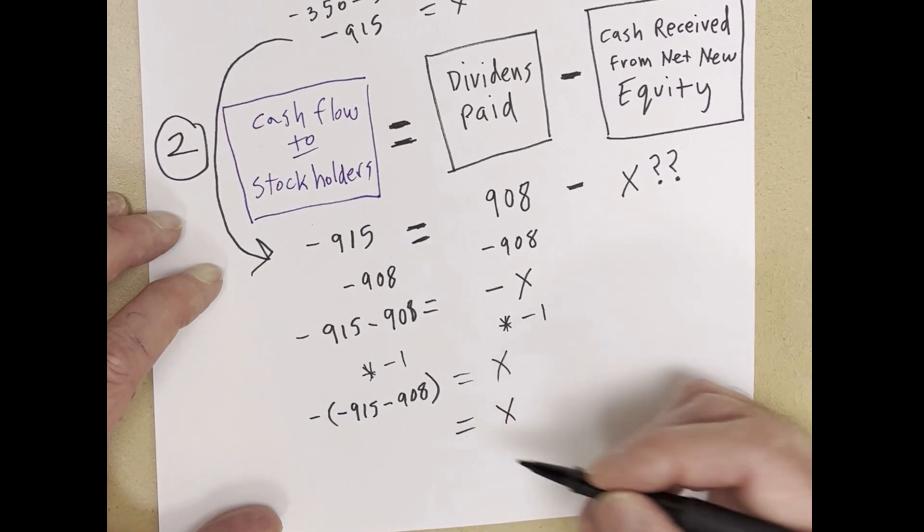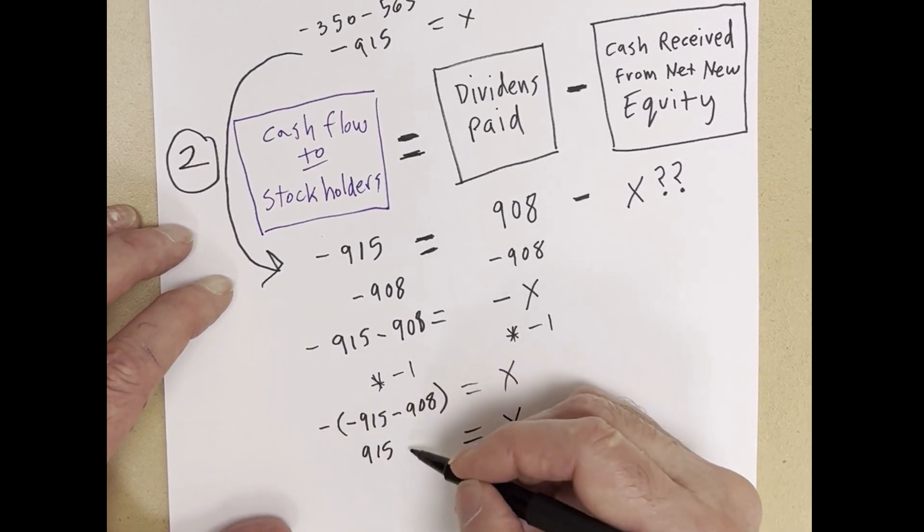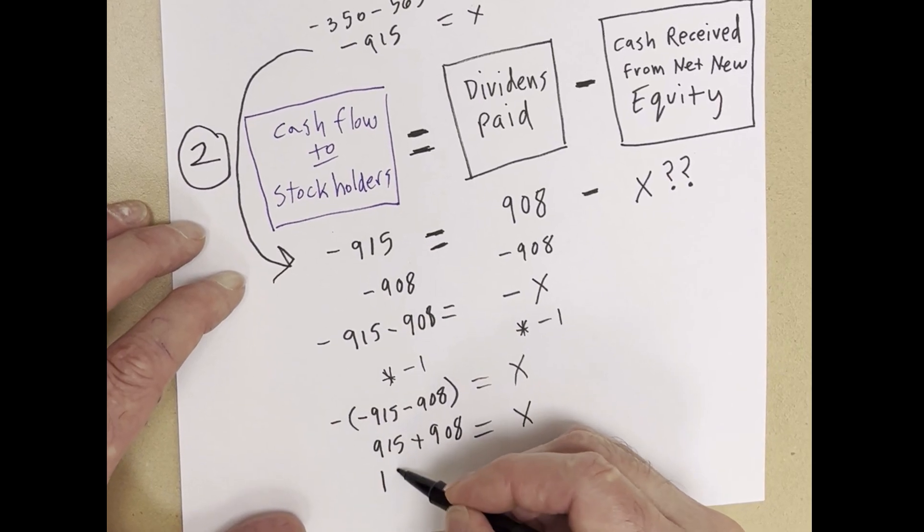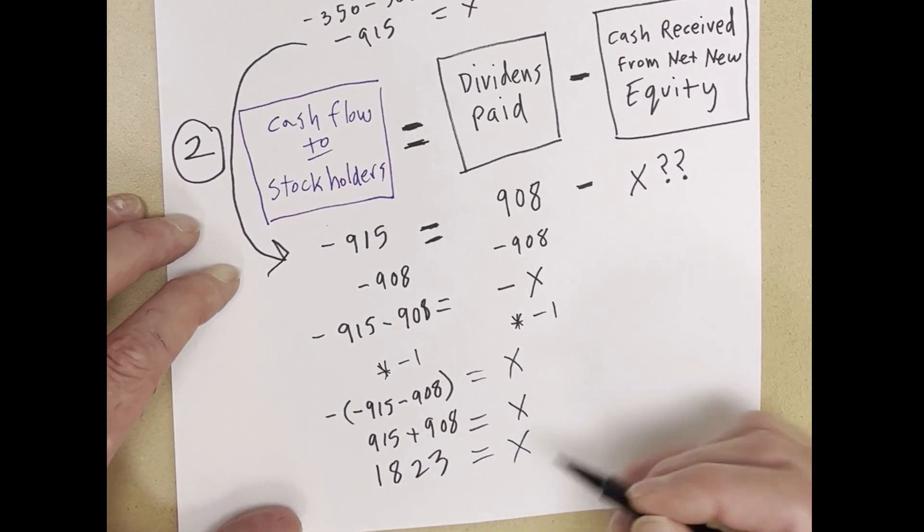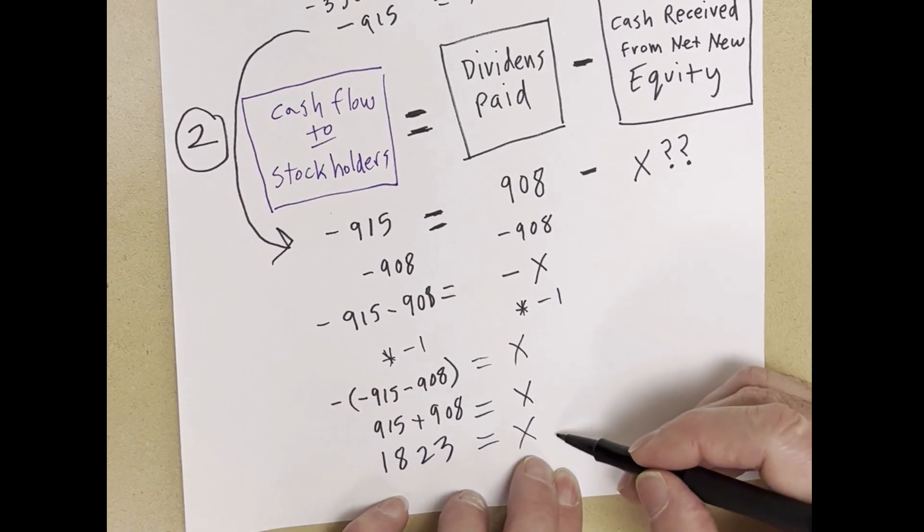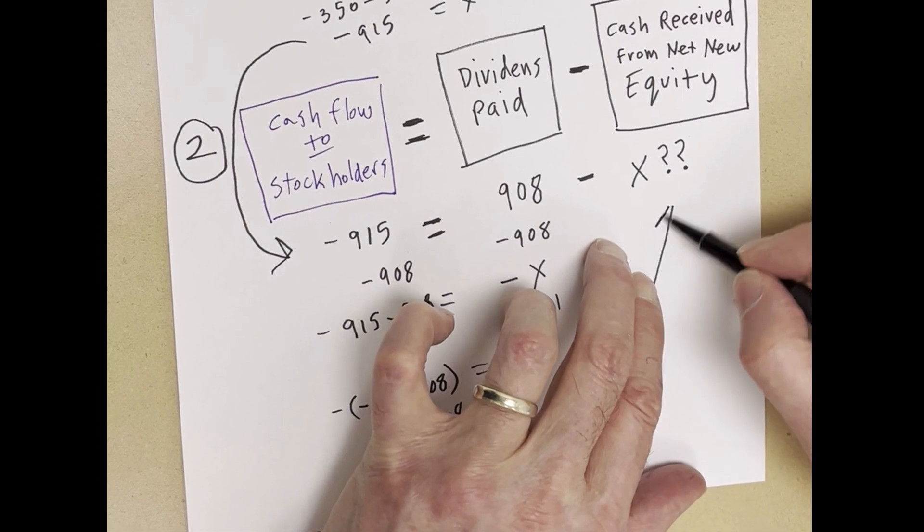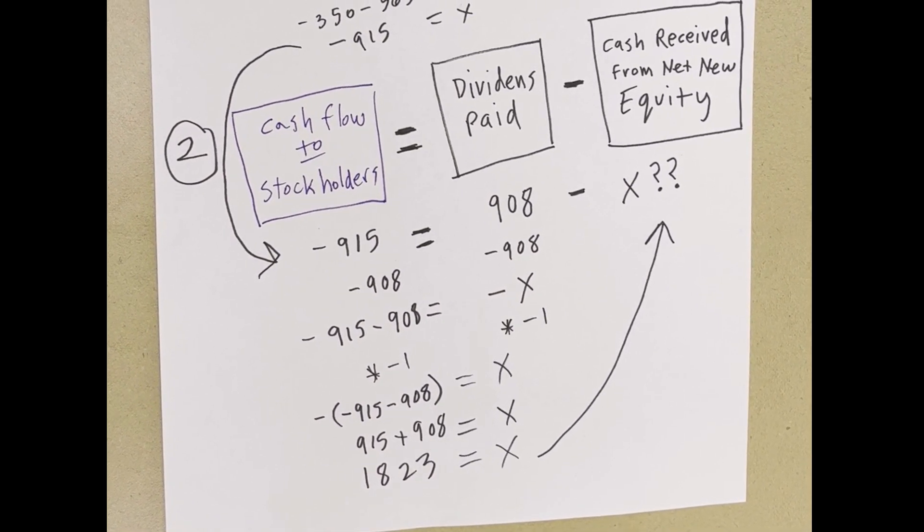When we solve for it, we bring the minus in 915. Bring the minus in plus 908. And we are left with 1823 equals x. And that is the cash received from new or net new equity. All right, team. We'll see you next video.